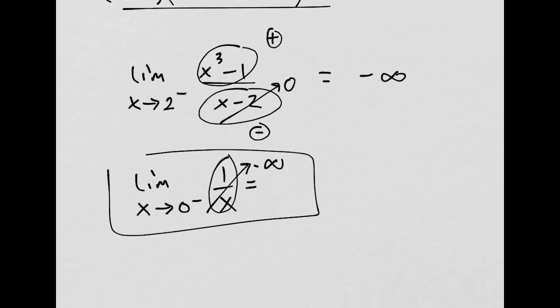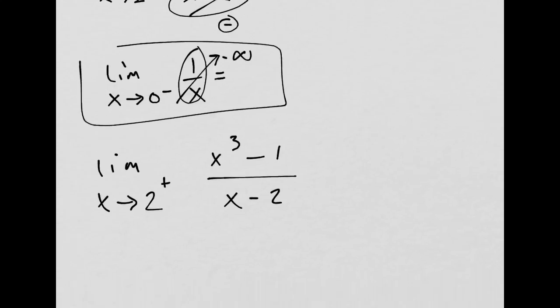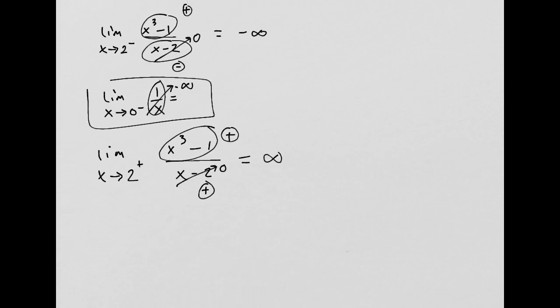So, it either goes to negative infinity or positive infinity. If I check the other side, x approaching 2 from the right side, we get the opposite reaction. So, here I'm plugging in, like, 2.1. So, this still goes to 0, however, from a positive perspective, and this is also positive. So, when the bottom is going to 0, the whole thing goes to infinity.